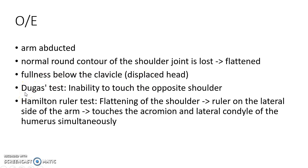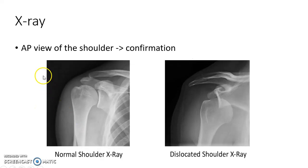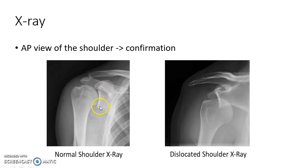Signs seen in shoulder dislocation include the Dugas test and the Hamilton ruler test. In the Dugas test, the patient is unable to touch the opposite shoulder. In the Hamilton ruler test, due to flattening of the shoulder, a ruler placed on the lateral side of the arm will touch both the acromion and the lateral condyle of the humerus simultaneously. For diagnosis, an anteroposterior X-ray view of the shoulder is used for confirmation.